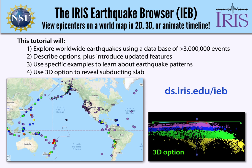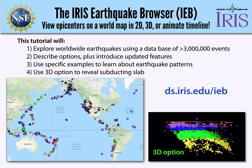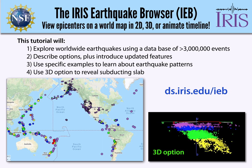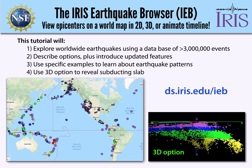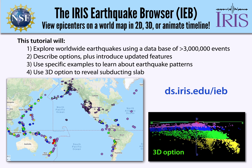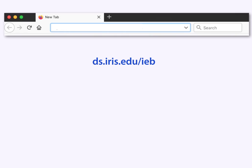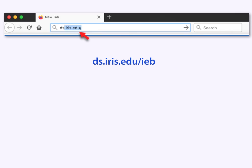Hi, I'm Wendy Bohan from the Incorporated Research Institutions for Seismology. The IRIS Earthquake Browser, or IEB, is a web-based tool that allows you to look at worldwide earthquakes and filter them based on your specific learning objectives and goals. Let's get started. Type this URL into your web browser: ds.iris.edu/IEB.